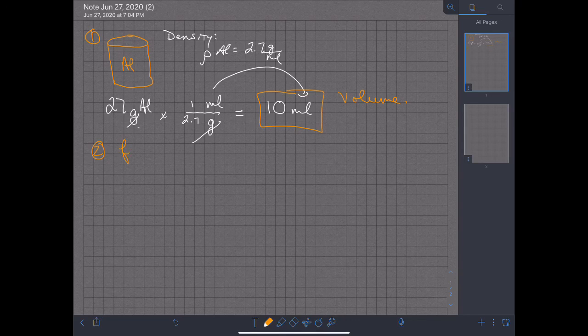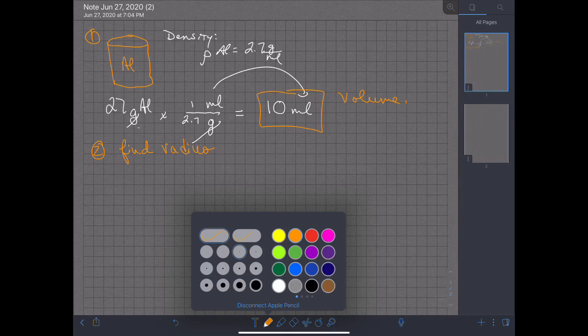So let's look at the second part, which is to find the radius. We want to find the radius of this cylinder. To do that, we need to have the formula for the volume of the cylinder.